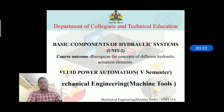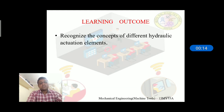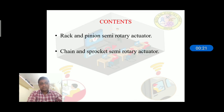Hello students, welcome to the third session of Unit 2: Basic Components of Hydraulic System, which comes under the course Fluid Power Automation. After completion of this unit, students are able to recognize the concept of different hydraulic actuation elements. In this session I am going to give a brief explanation about rack and pinion semi-rotary actuator and chain and sprocket semi-rotary actuator, which are types of semi-rotary actuators.